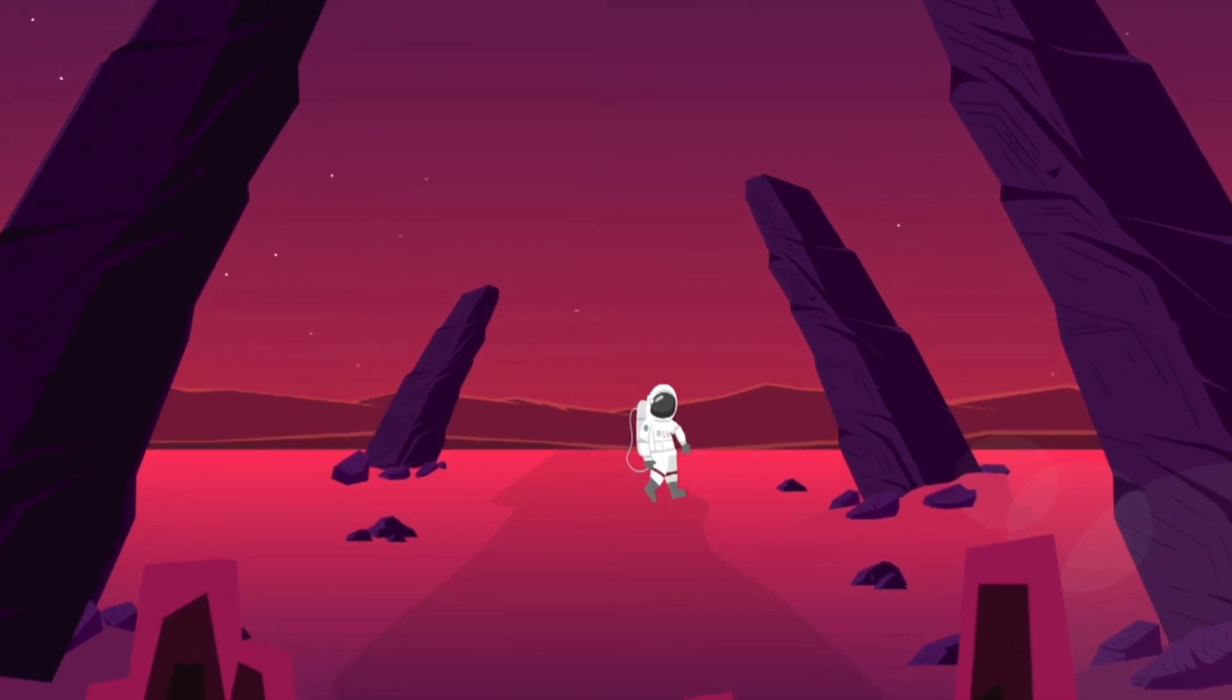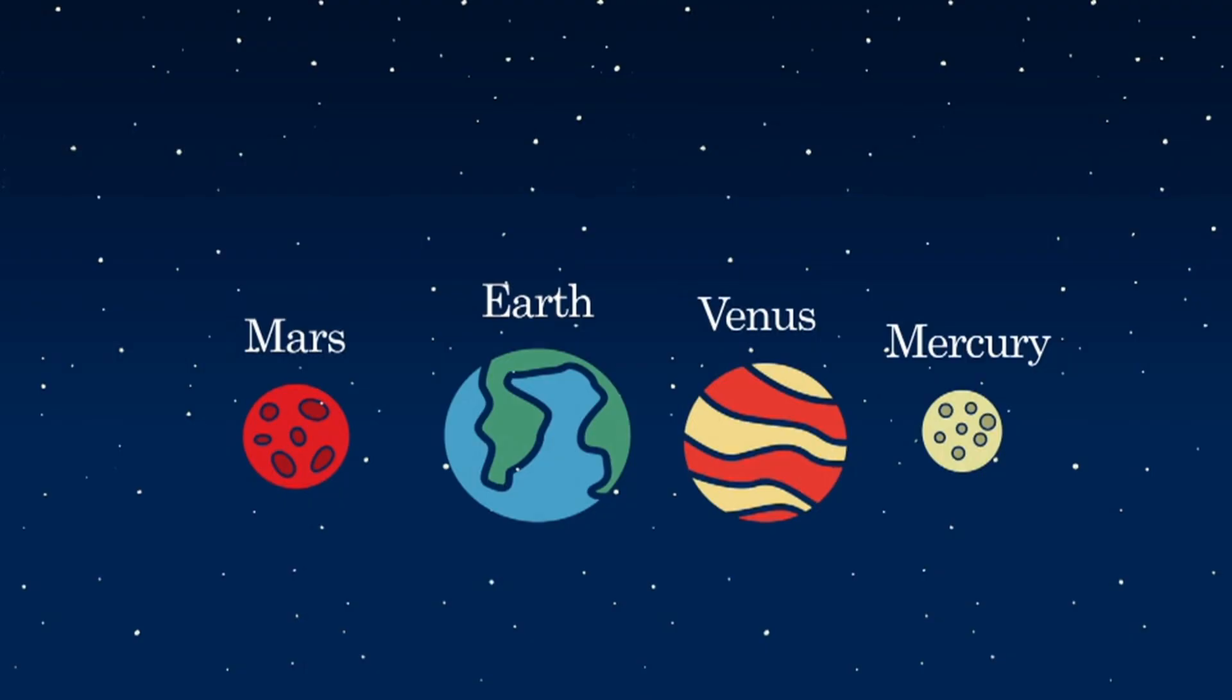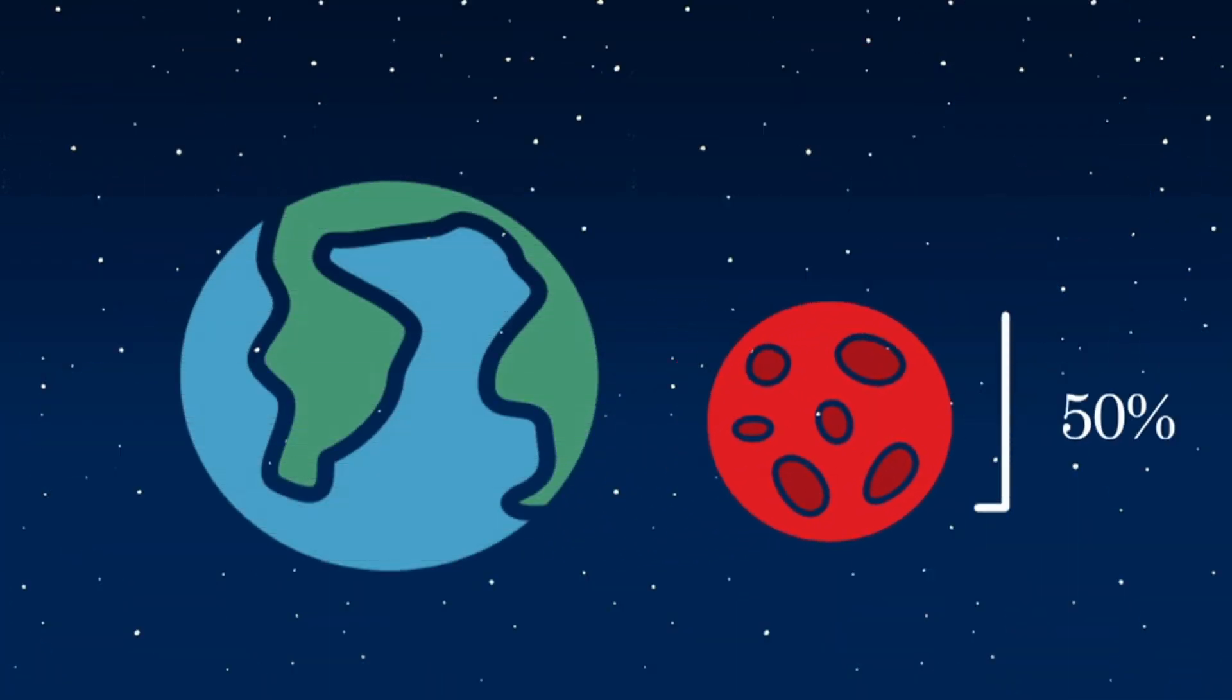مما يدعو العيش على الزهرة غير واعد تماما. الأمر الذي جعلنا أن نركز على خيارنا الأفضل، كوكب المريخ. أي نعم، أصغر من كوكبنا بالنصف تقريبا، لكنه يتميز بوجود الأساسيات الضرورية لدعم الحياة. فالمريخ يملك مصدر طاقة قادما من الشمس، ويوجد الماء على هيئة ثلوج في القطبين، ولديه بعض العناصر المهمة.